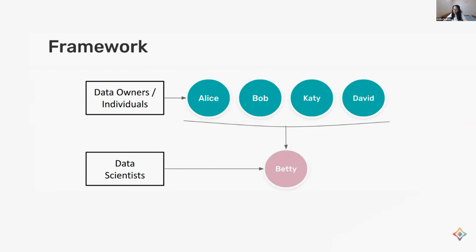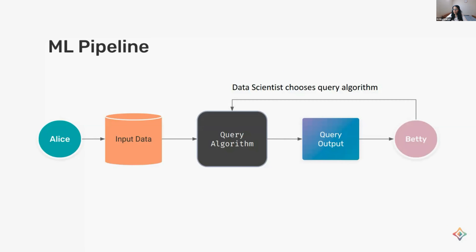We'll use a simple framework for the rest of the talk. There are two categories: data owners, the individuals who actually own their personal data, and data scientists, who don't want the raw data but want to infer meaningful conclusions from it — like that smoking causes cancer. A standard ML pipeline looks like this: Alice, a data owner, contributes input data that passes through a query algorithm chosen by the data scientist Betty, who receives the output.